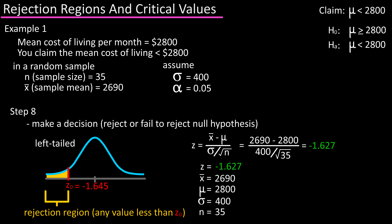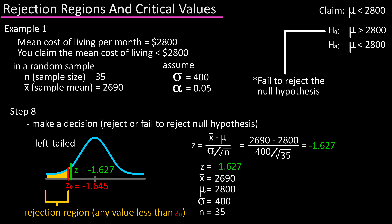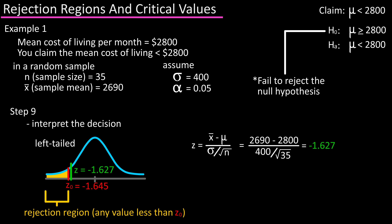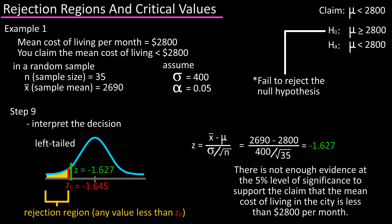Step eight: make a decision. On our graph, the standardized test statistic does not fall in the rejection region, as z, the standardized test statistic, is greater than z-naught, the critical value. So we would fail to reject the null hypothesis. Step nine: interpret the decision. There is not enough evidence at the five percent level of significance to support the claim that the mean cost of living in the city is less than $2,800 per month.